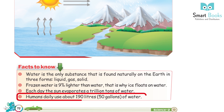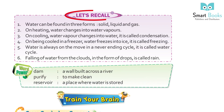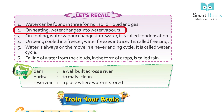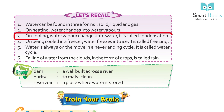Let's recall: 1. Water can be found in three forms — solid, liquid, and gas. 2. On heating, water changes into water vapors. 3. On cooling, water vapor changes into water — it is called condensation.